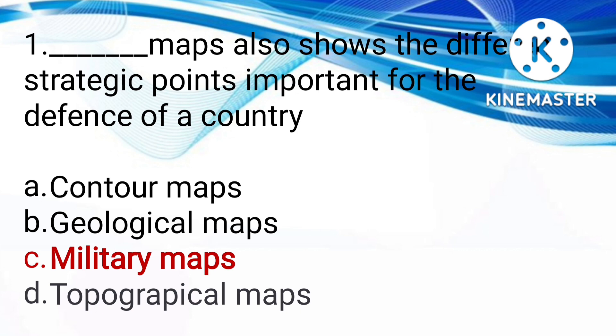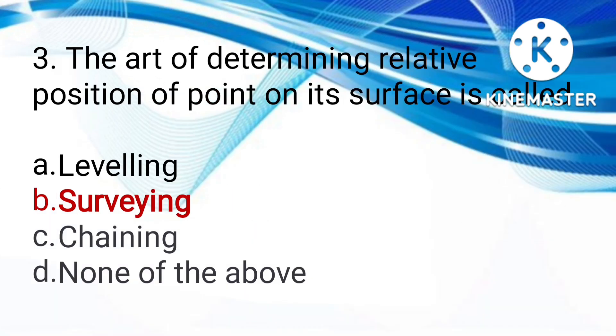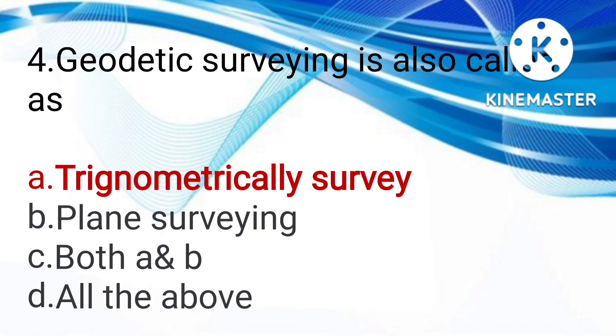Next question: The maps that show the boundaries of a field and houses and other properties - cadastral maps, engineering maps, military maps, or contour maps. The answer is cadastral maps. The art of determining relative position of points on the surface is called leveling, surveying, or chaining. The answer is surveying.